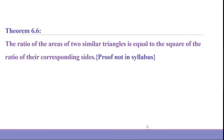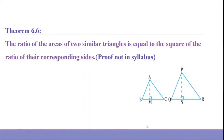Now we have theorem 6.6 in our books. The ratio of areas of two similar triangles is equal to the square of the ratio of their corresponding sides. This is a very important result. Though the proof is not in syllabus for the year 2021, the application can very well be asked.